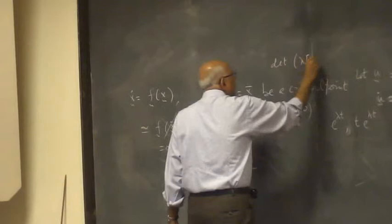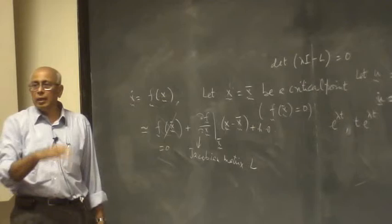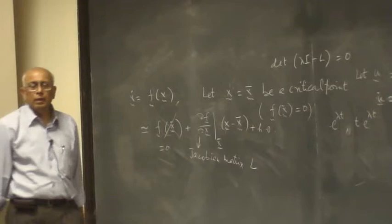I simply have to solve this secular equation, this characteristic equation: lambda I minus L equal to zero. This will give me the set of eigenvalues. It's just an algebraic polynomial equation of degree capital N, and I solve and I get all the eigenvalues. They're repeated or not repeated, I don't care.